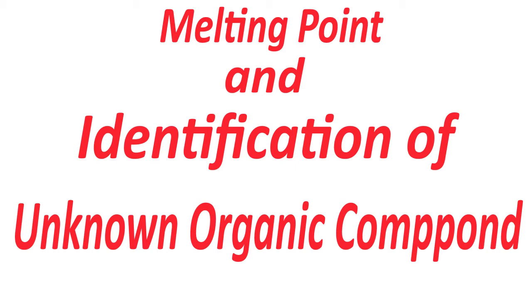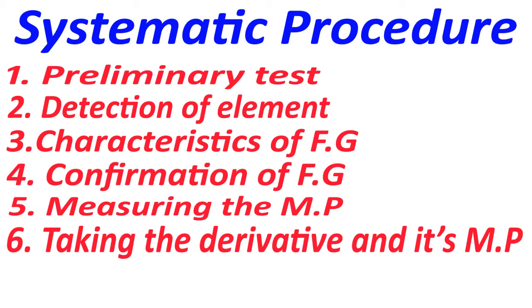In organic chemistry, in your laboratory, when your experiment is to identify an unknown organic compound, we follow a systematic procedure with the following steps: first, the preliminary test — checking acidity, basicity, etc.; second, detection of elements and finding whether to follow the CHN or CHO system; third, identifying characteristics of the functional group and confirmation of the functional group; and then taking the melting point of that compound.